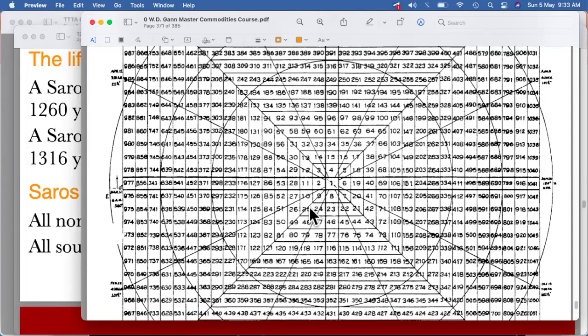And all the squares of odd numbers which are 9, 25, 49, 81, 121, 169, they fall on one side of the diagonal. And the even numbers, the square of even numbers and the square of odd numbers, they are on opposite sides.